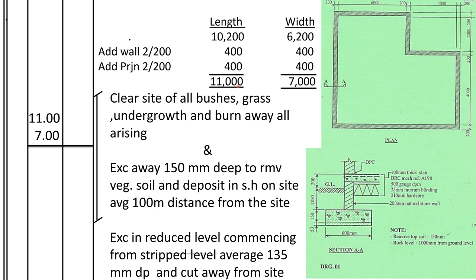Now for the width: 6,200 — if you add all those dimensions you get 6,200 — plus 400, then add the projection of 200 on this side and 200 on the other side. You can see that we have assumed this diagram is a rectangle by taking 11,000 and 7,000.